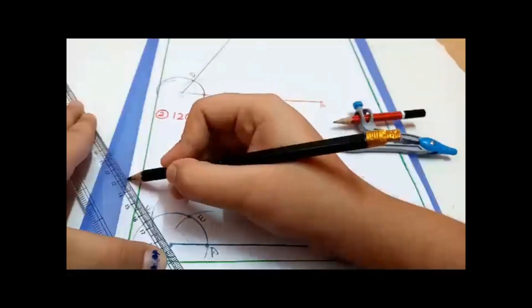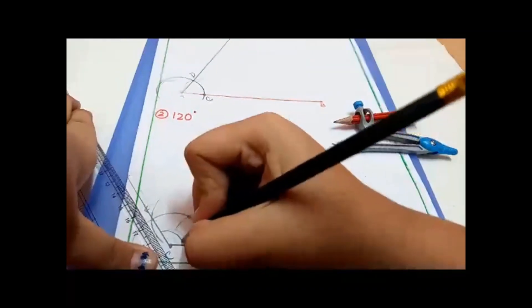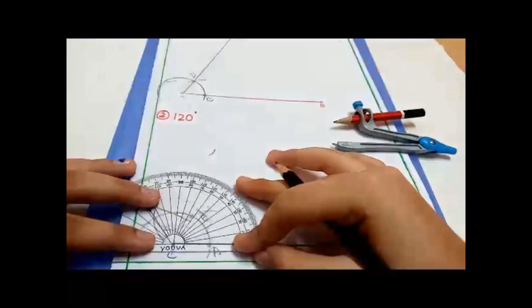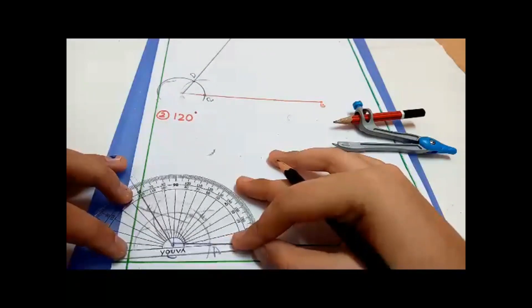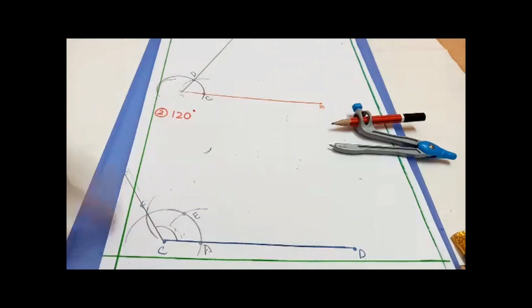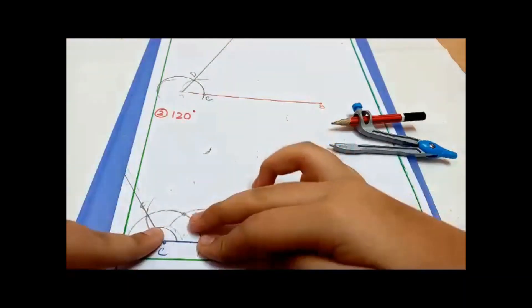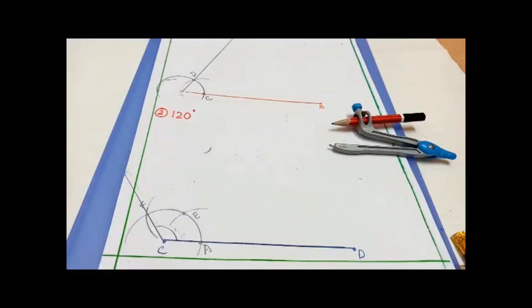Mark the new arc point as F and join F and C. This angle should be 120 degrees. Let's verify — yes, we get 120 degrees. So 60 degrees plus 60 degrees equals 120 degrees. That is why we first draw 60 degrees and then from that point extend to 120 degrees.